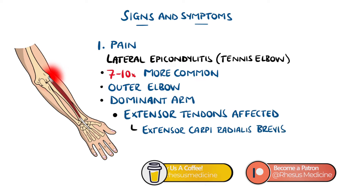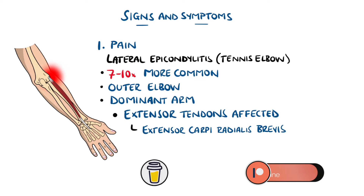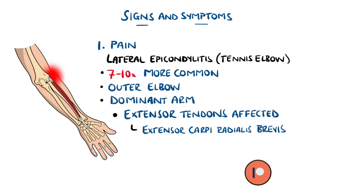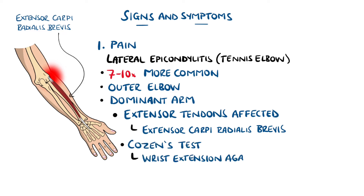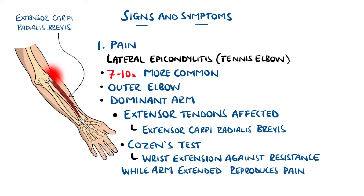In particular, the extensor carpi radialis brevis is commonly affected in lateral epicondylitis. There is typically worsening of the pain with wrist extension against resistance when the elbow is extended, known as Cosen's test.